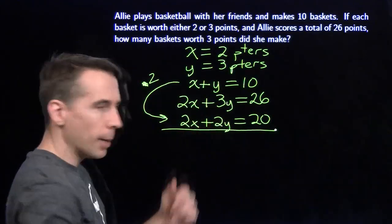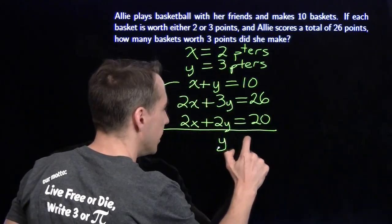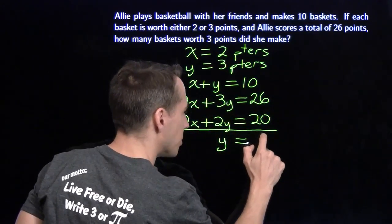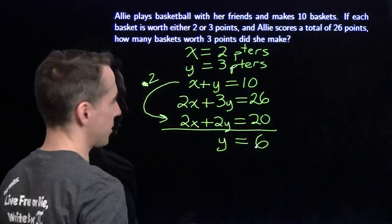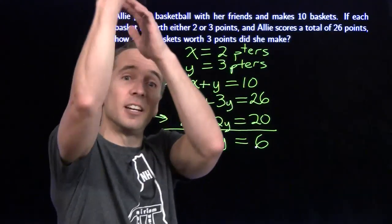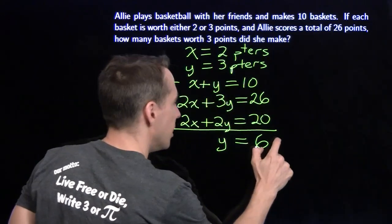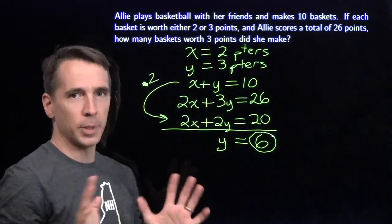The x's cancel out. 3y minus 2y leaves us y equals 26 minus 20, which is 6. She must be a Steph Curry fan just sitting out there dropping in the 3s, because she hit 6 three-pointers.